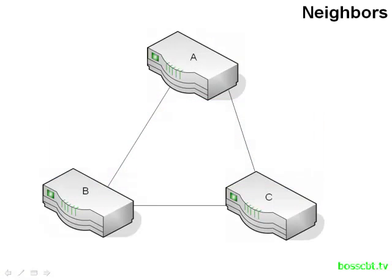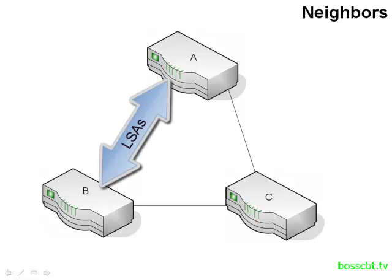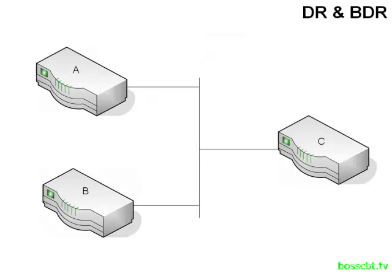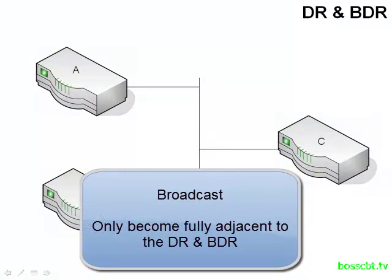Here, router A and B have a point-to-point network segment between them. At the point where they become two-way, their default behavior would dictate that they go ahead and begin to exchange information, eventually becoming fully adjacent. However, if your network type is broadcast — a lot of different devices connected at the same time — the default behavior actually changes. On a shared network with routers A, B, and C all connected to the same network segment, the default behavior is do not exchange your link state database, and do not become fully adjacent to all other members on that segment by default.